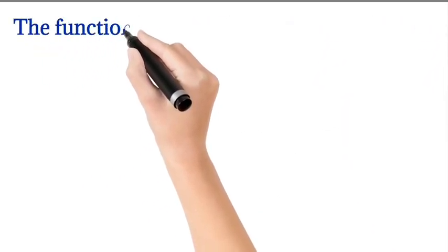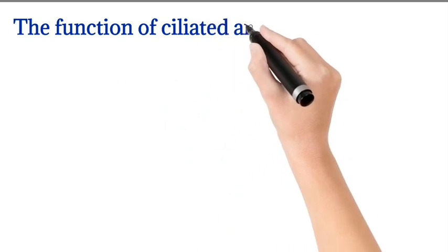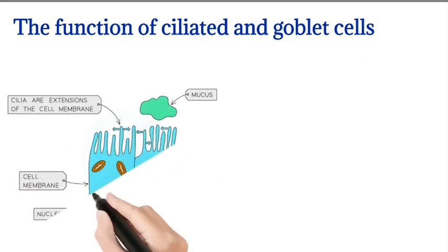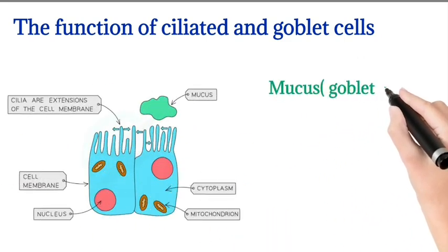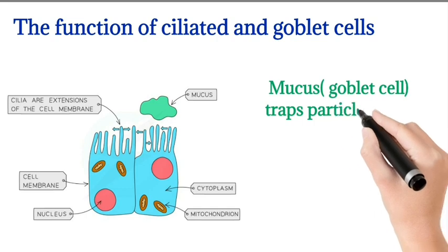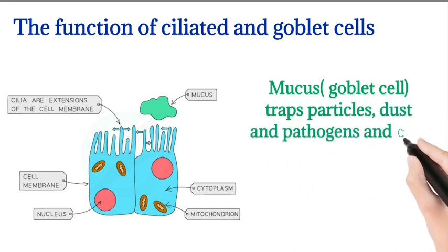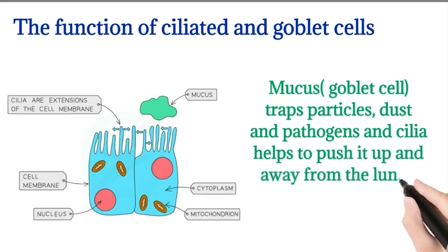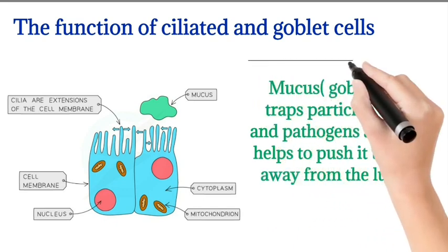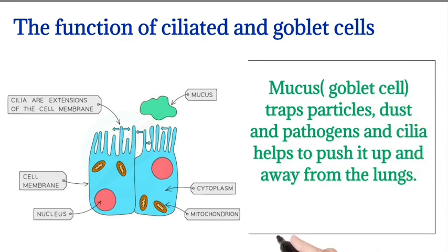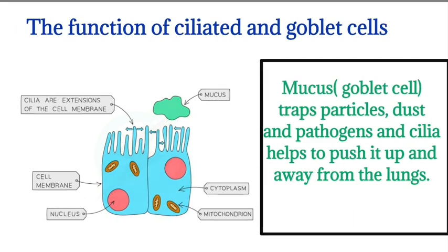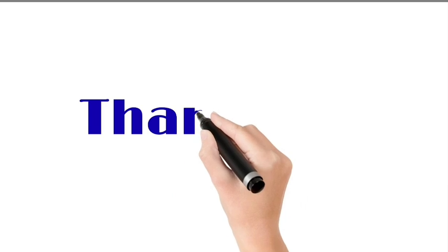Next we move on to the functions of ciliated and goblet cells. See the picture. The mucous cells, otherwise known as goblet cells, help to trap particles, dust, and pathogens. The ciliated cells help to push these up and away from the lungs. I hope you have understood today's topic — thank you.